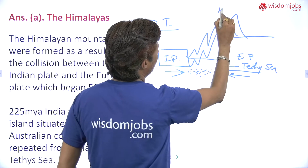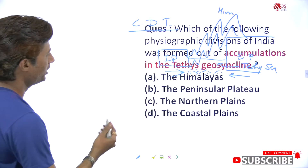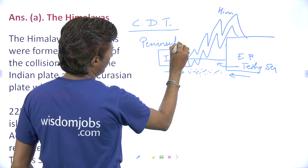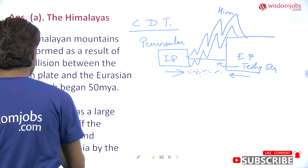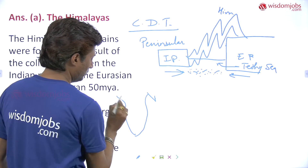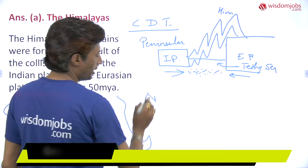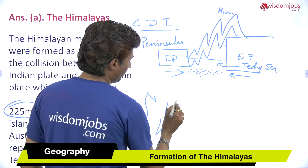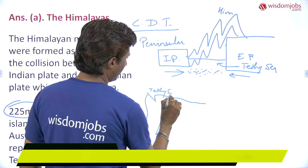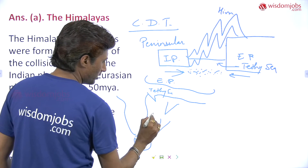Now, how was the peninsular plateau formed? The Indian plate, which was already formed around 225 million years ago near the base of Africa, was also attached to Australia. This Indian plate — which became the peninsular plateau — started moving towards the Tethys geosyncline where the Eurasian plate was located, and began drifting in that direction.